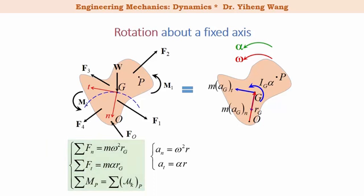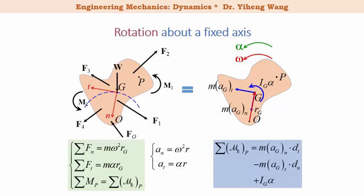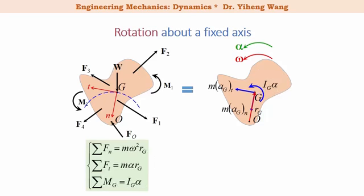Therefore, we can rewrite the set of equations accordingly. The last equation remains: the resultant moment summarized about an arbitrary point P equals the total kinetic moment about P, calculated by treating m*a_GT and m*a_GN as inertia forces and computing their moment about P through moment arms, and treating I_G * alpha as a free couple moment. Once again, for convenience we can summarize the moment about G, the gravitational center, so the third equation simply becomes: resultant moment about G equals I_G * alpha.